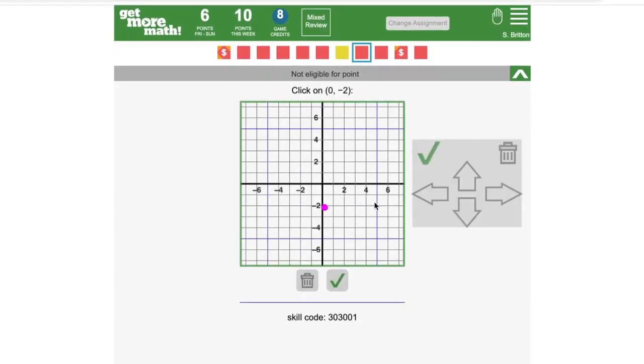Plotting a point on a coordinate plane is about the same deal. Again, you can use the arrows to adjust the location of your point, or use the trash can to delete it, and you can click on the green check when you're done.